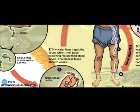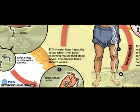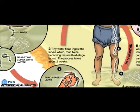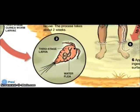Tiny water fleas residing in the water source ingest the larvae, which molt twice, becoming mature third-stage larvae. The process takes about two weeks. Here you see the third-stage larvae within the water flea.